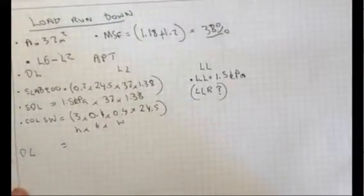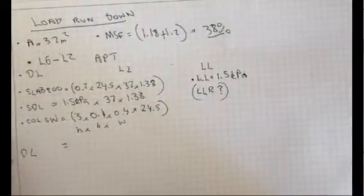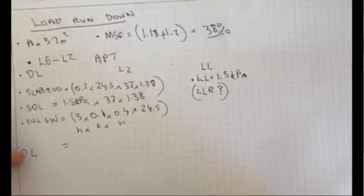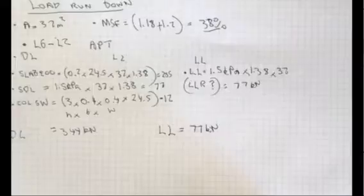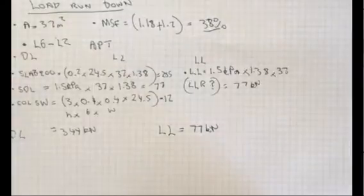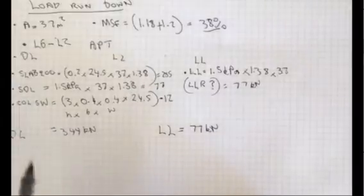What we've calculated here is the load for one column from level 6 to level 2. The sum of all the dead loads here for this one level equals 344 kN, and the sum of the live load, which is just the one, is 77 kN.